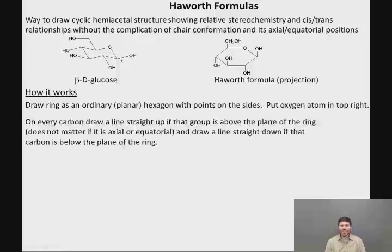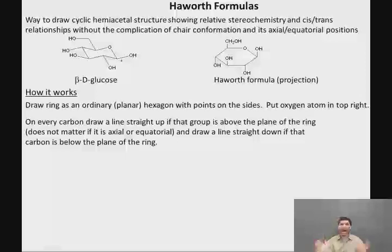So on every carbon, then, we're going to draw a line straight up if that group is above the plane of the ring. It does not matter if it is axial or equatorial. If it's going up, it gets a line straight up, and you draw a line straight down if that carbon is below the plane of the ring.